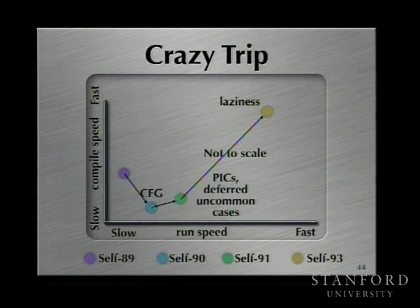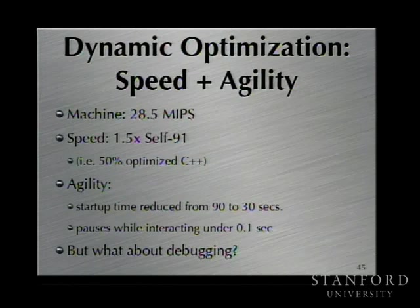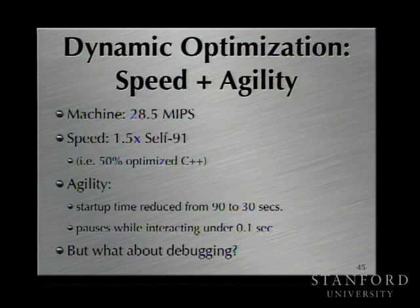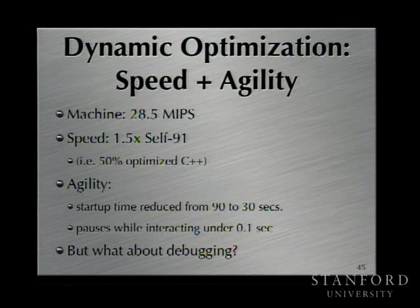Very briefly on performance numbers: on a 28-MIPS machine with lazy compilation, execution time went up by a factor of only 1.5. On the Stanford integer benchmarks, we were going 50% the speed of optimized C++. If anyone ever gives you speed numbers without comparing to optimized C or C++, be very skeptical — this was the gold standard at the time and probably still is. We got agility: startup time went down to half a minute from a minute and a half, and while interacting, pauses went under a tenth of a second.